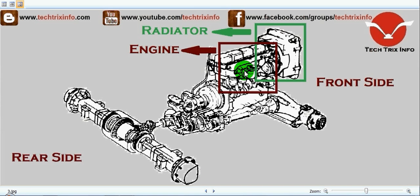Next we have the engine, or the prime mover. It is called a prime mover because this part is producing the power for the other components to work. The engine creates the power and transmits it through various systems towards the wheels.